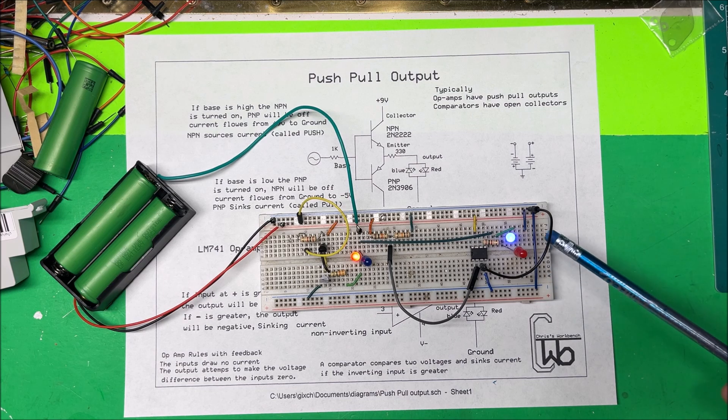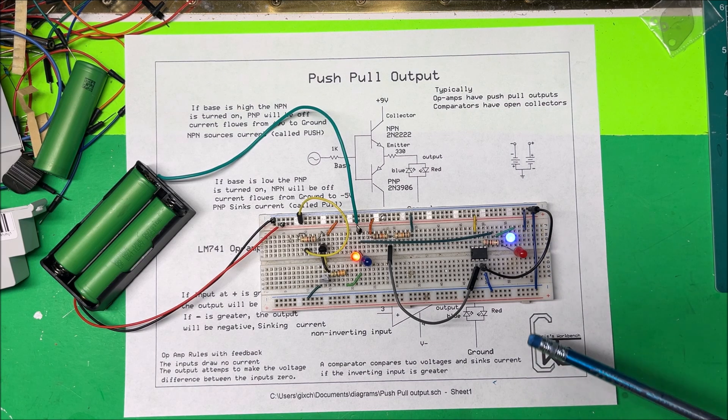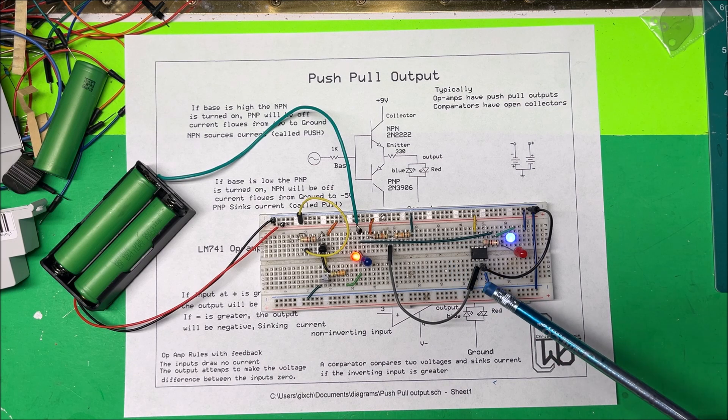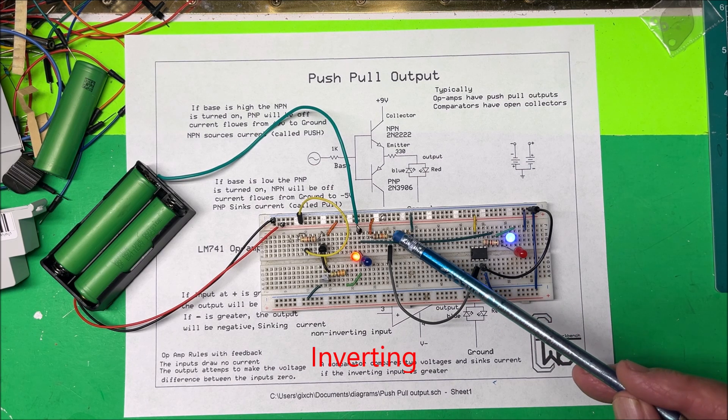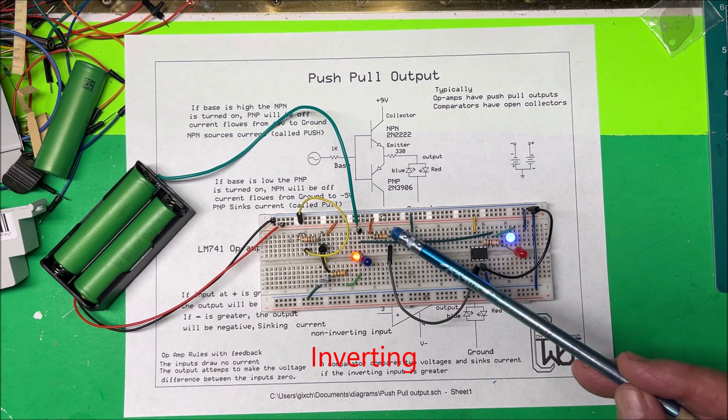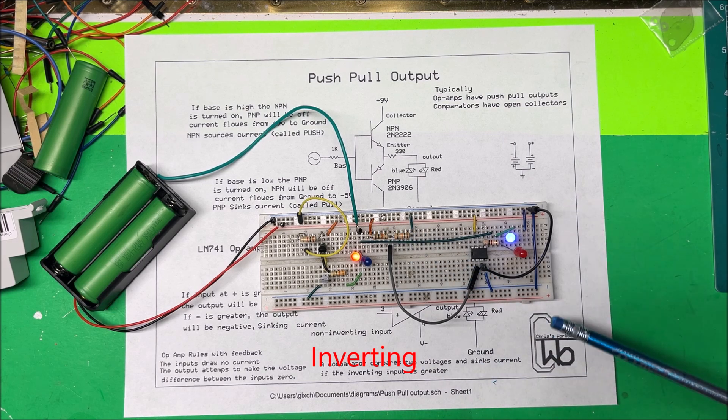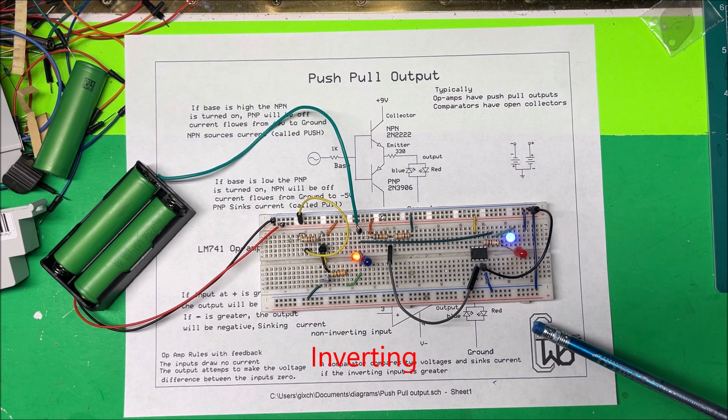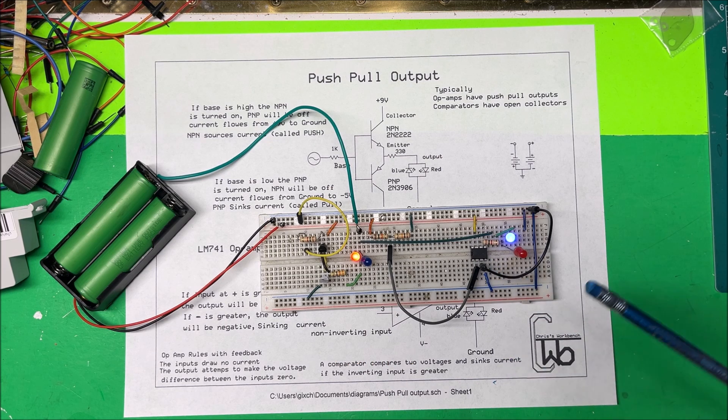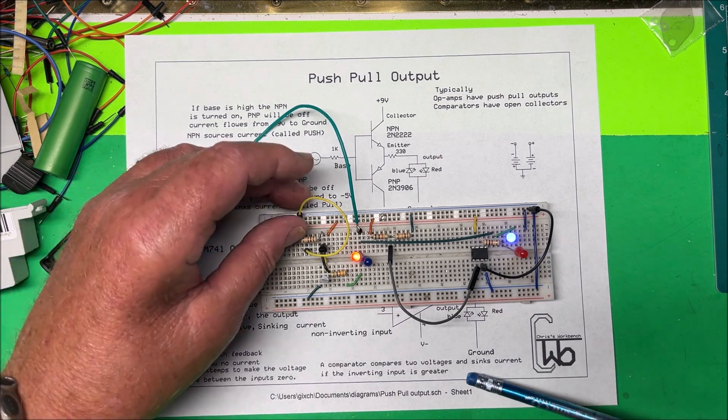So I have pin 2 here, the non-inverting side, I have a voltage divider here so I have half the voltage on that. And then I can just change the voltage on the pin 3 here, but that's how that works.